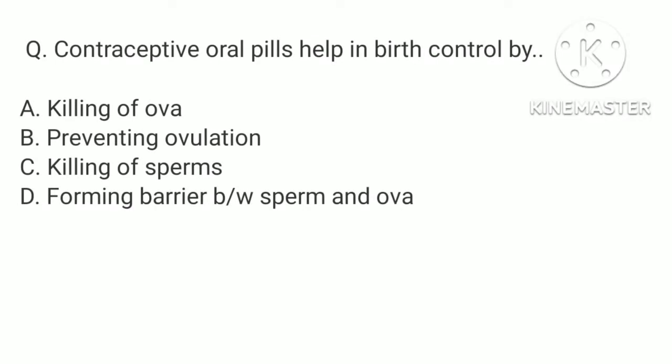Contraceptive oral pills help in birth control by: a. Killing of ova, b. Preventing ovulation, c. Killing of sperms, d. Forming barrier between sperm and ova. The correct answer is b. Preventing ovulation.